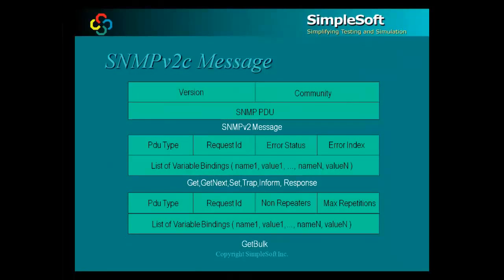This diagram shows the actual structure of the SNMP v2c message. Unlike SNMP v1, all PDU types have basically a similar structure, except that get-bulk includes non-repeats and max-repetitions in the place of error status and error index. Informs, which are used in distributed management, define a mechanism for an agent to send a trap-like packet for which the manager sends an acknowledgement back using a response PDU. Report PDUs, while defined in SNMP v2c, are used in SNMP v3 to sync up between the manager and agent implementations.